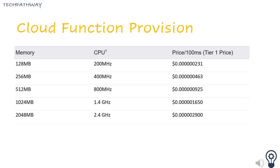Cloud Functions can be provisioned as one of five types: 128 MB and 200 MHz; 256 MB and 400 MHz; 512 MB and 800 MHz; 1024 MB and 1.4 GHz; 2048 MB and 2.4 GHz. Pricing is calculated as price per 100 ms.